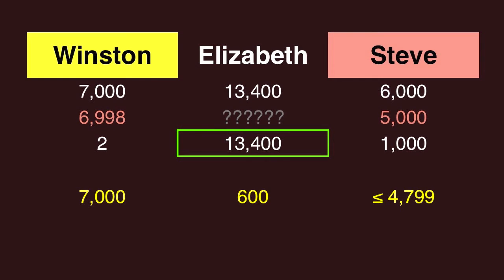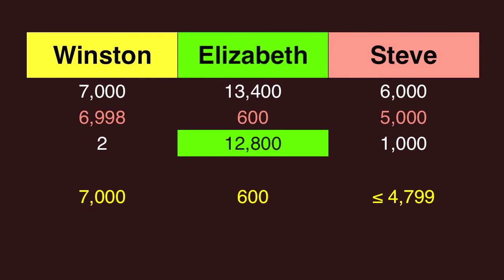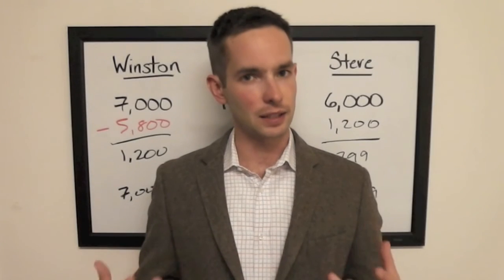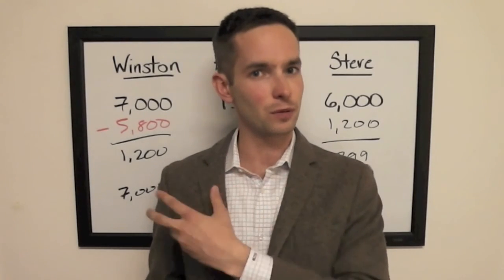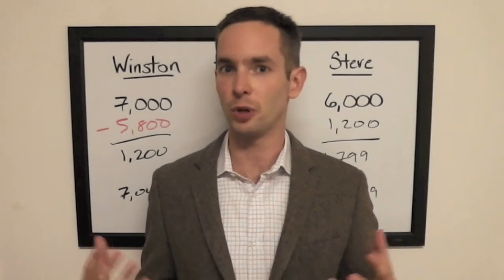I don't like that wager, and you can see why, because Elizabeth got it wrong and wagered 600, so had both Elizabeth and Winston gotten it right, Winston would have lost by that $2. You don't want to do that.